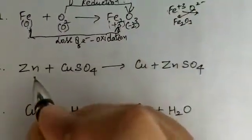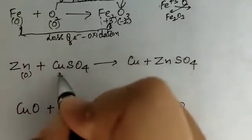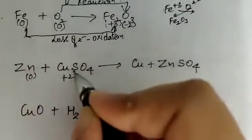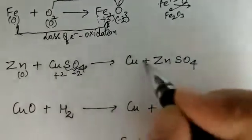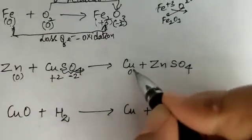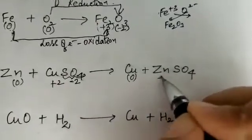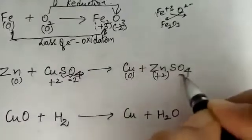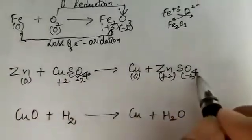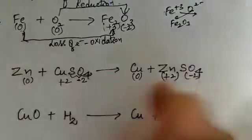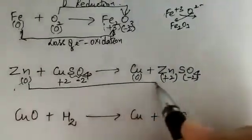Let us see another example. We assign zero to zinc because it has no charge. Copper is having plus 2 and sulfate is carrying minus 2 charge. On the product side, copper is carrying zero because it is present in elemental form, zinc is carrying plus 2 charge, and sulfate is minus 2. So basically there is no change in the valency of sulfate.